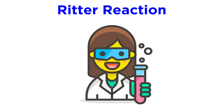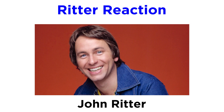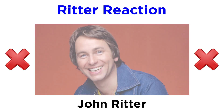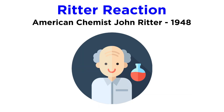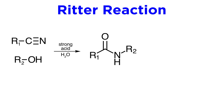Next up in our survey of name reactions is the Ritter reaction. This one is named after American chemist John Ritter, who reported his earliest results in 1948. It is an interesting reaction that achieves the hydration of a nitrile to an amide, with alkylation of the amide nitrogen by an alcohol.